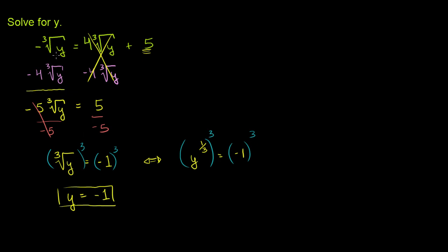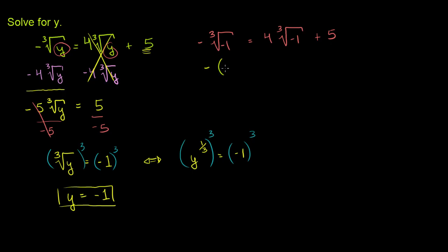Let's make sure that it actually works. Going back to our original equation with y = -1: the negative of the cube root of negative 1 has to equal 4 times the cube root of negative 1, plus 5. The cube root of negative 1 is negative 1, so this becomes the negative of negative 1, which equals 4 times negative 1, plus 5. That gives us 1 = negative 4 plus 5, which is 1. This is true, so y = -1 is our solution.